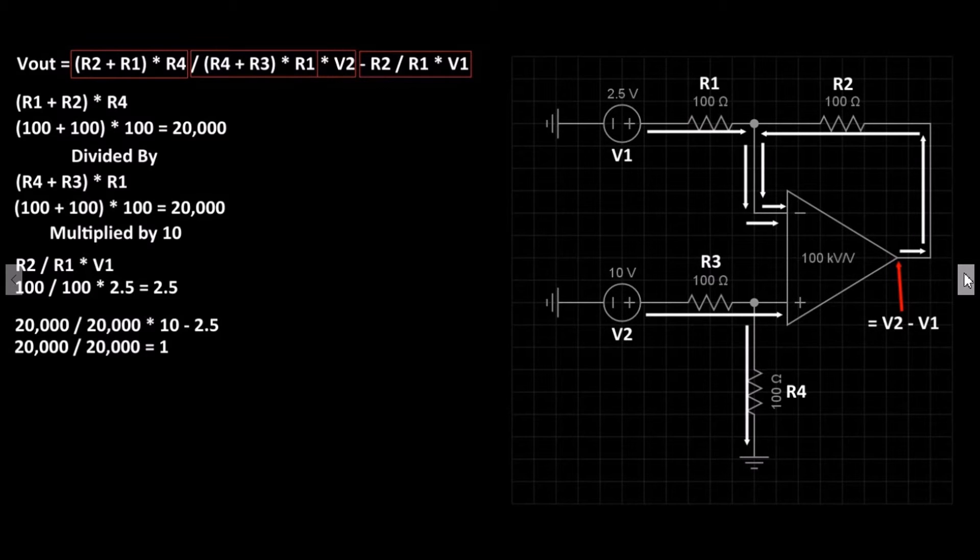So with these values, the formula looks much simpler: 20,000 divided by 20,000 multiplied by 10 minus 2.5. 20,000 divided by 20,000 equals 1. 1 multiplied by 10 equals 10. 10 minus 2.5 equals 7.5. So the output voltage we would see is 7.5 volts, which is the correct value of the difference in the input voltages.